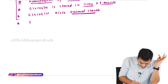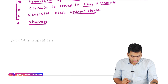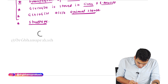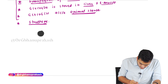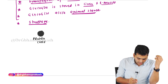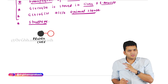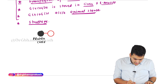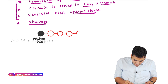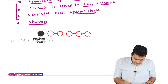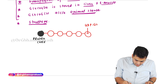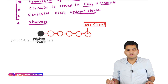Understanding the structure of glycogen is very important because if you understand the structure, the reaction part becomes easy. In the center of the glycogen molecule there is a protein core called glycogenin. On this protein core we add a modified glucose molecule — not pure glucose. The modified form is called UDP glucose.